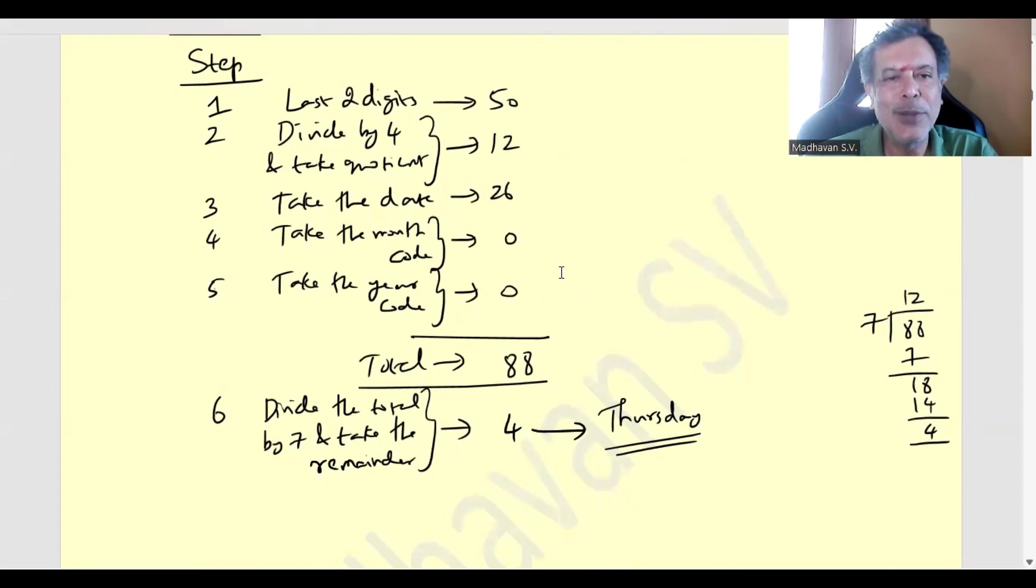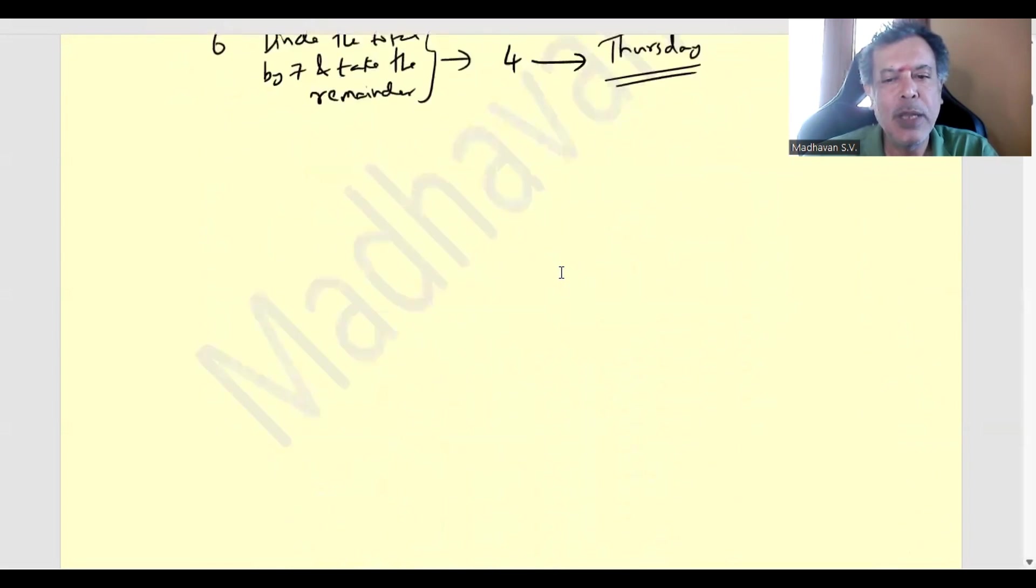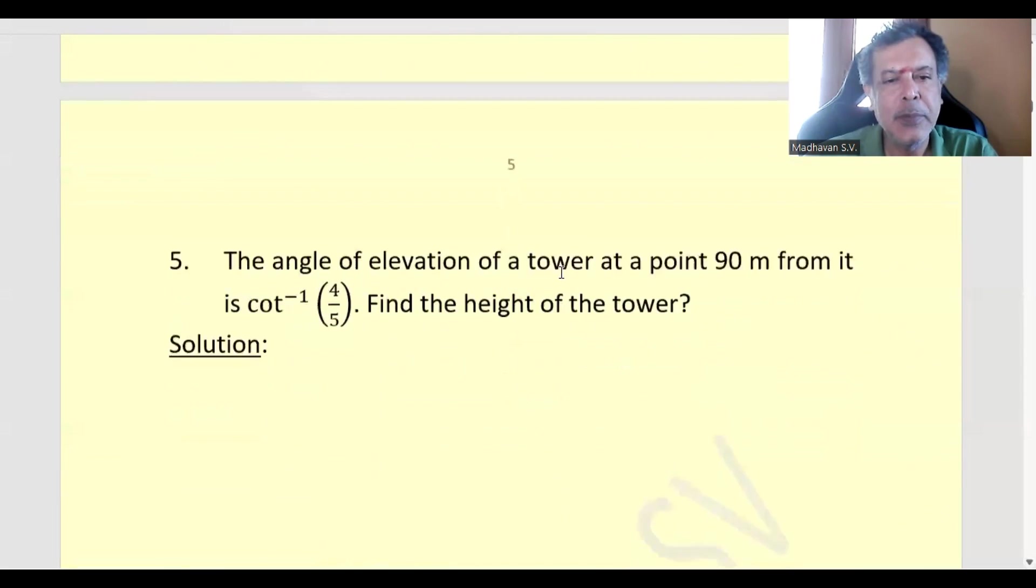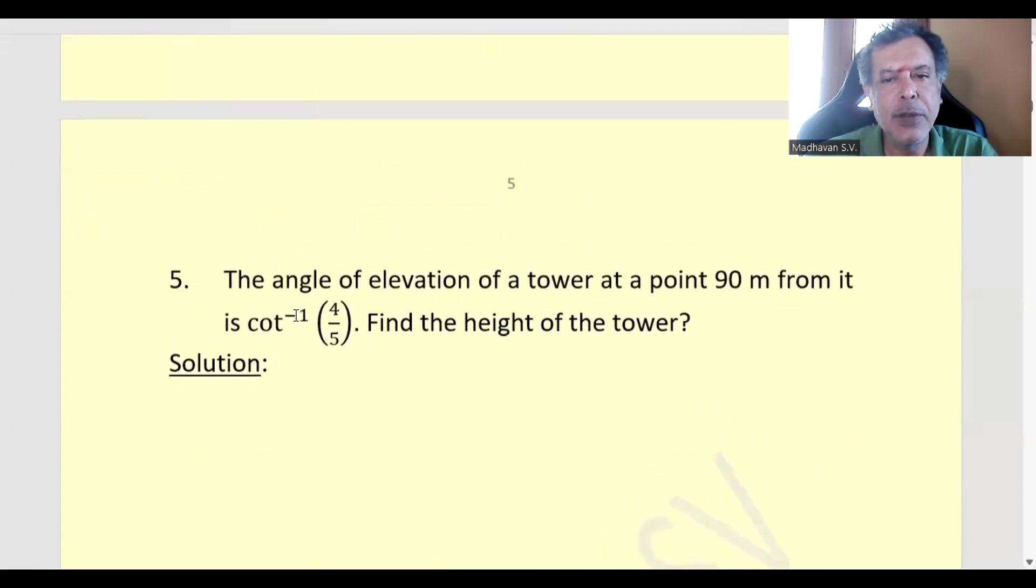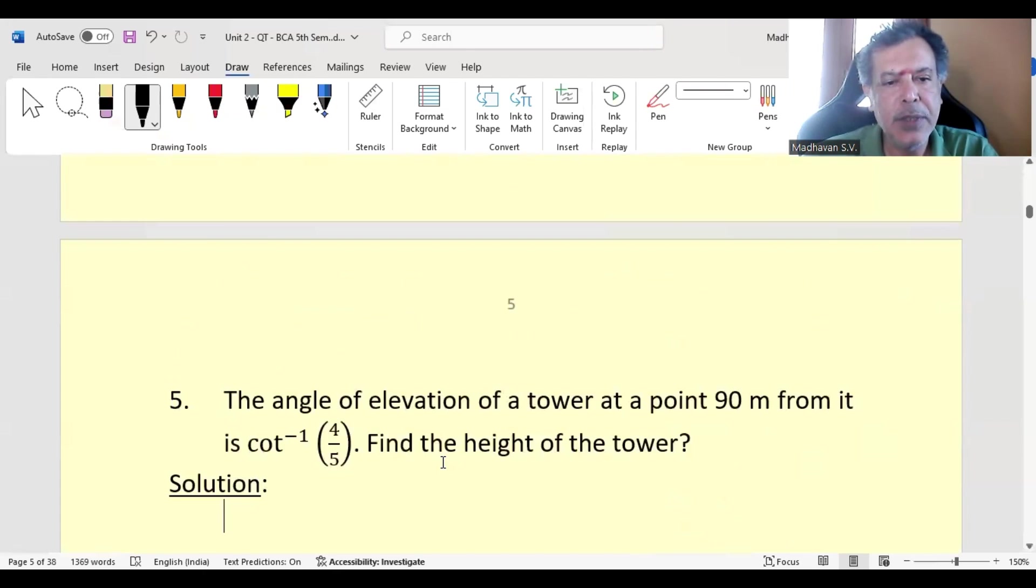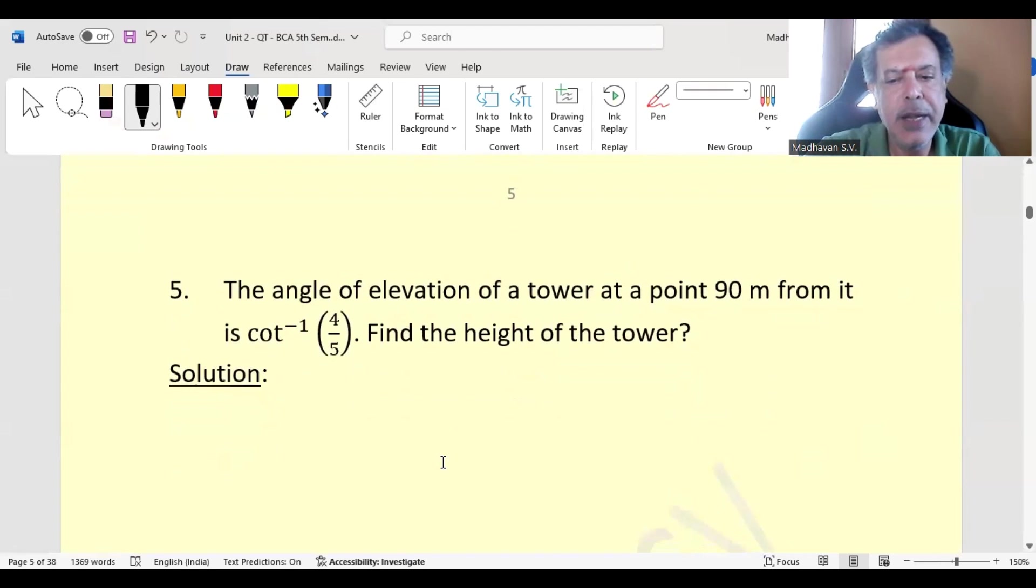That will be the solution for this question. Let us move on to the next one. The angle of elevation of a tower at a point 90 meter from it is cot inverse of 4 by 5, find the height of the triangle.